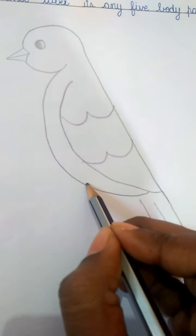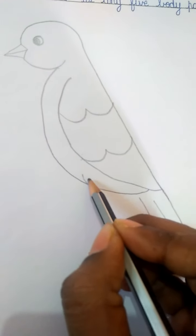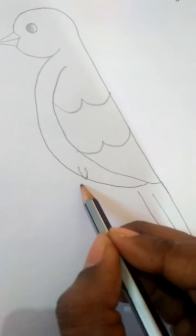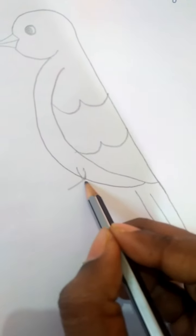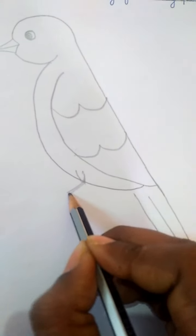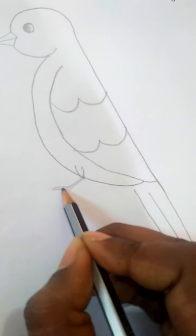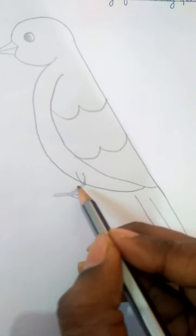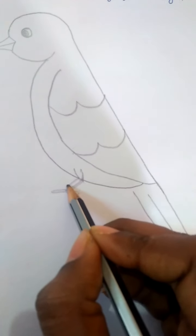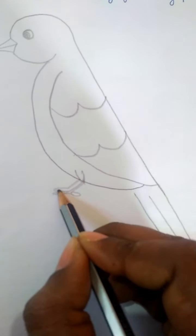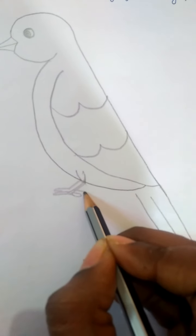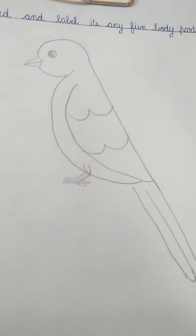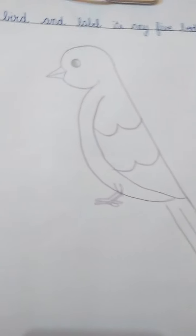Here we are going to draw the feet and now the claws. Quite easy to draw, we are drawing the simplest one. Now the other foot of the bird is somewhere behind this, so we are showing a part of that only because it is not visible completely. So here we are ready with the bird.